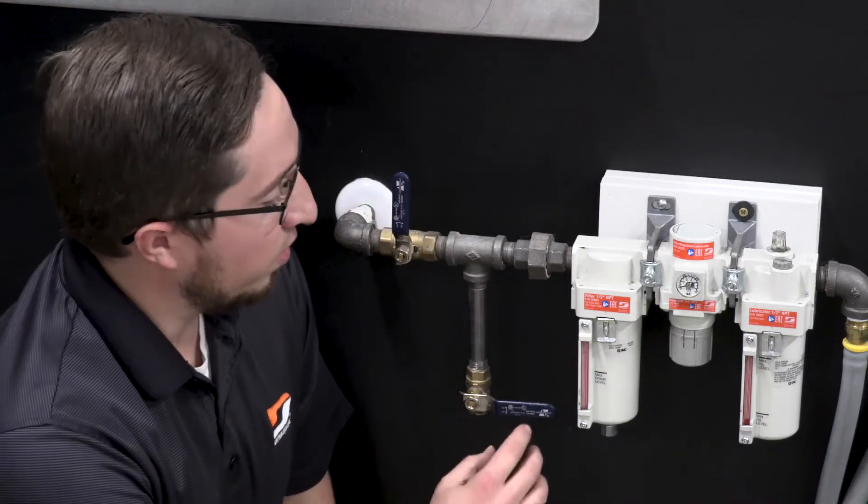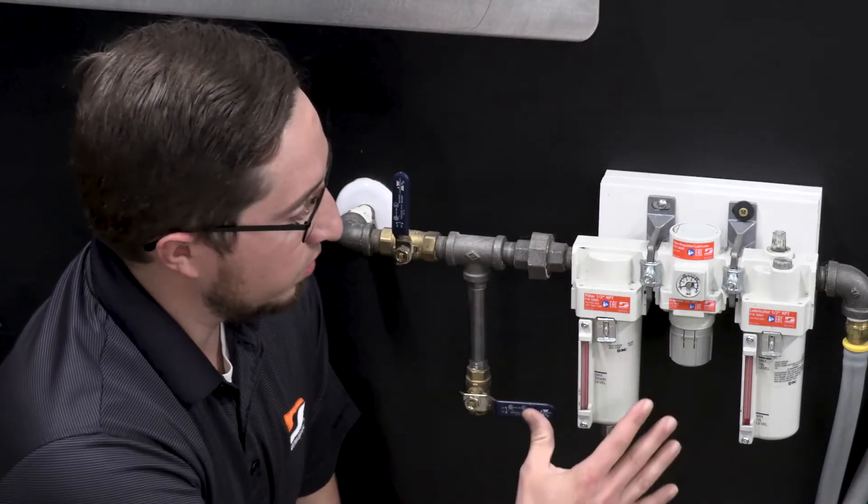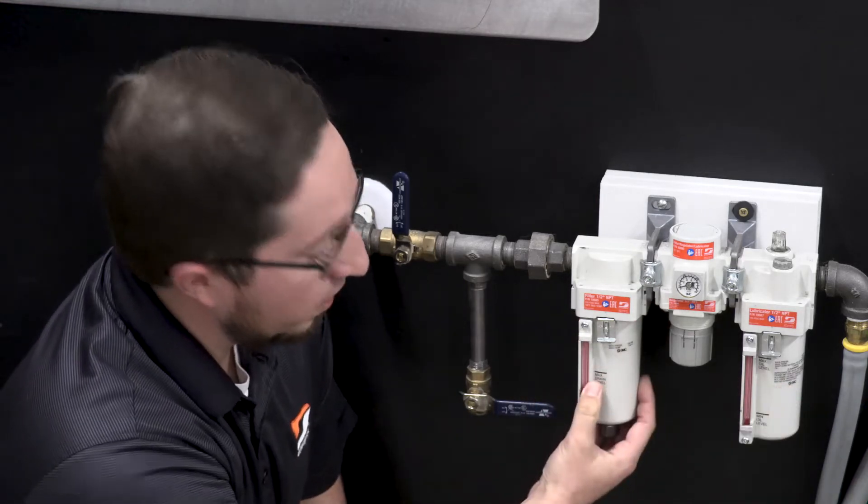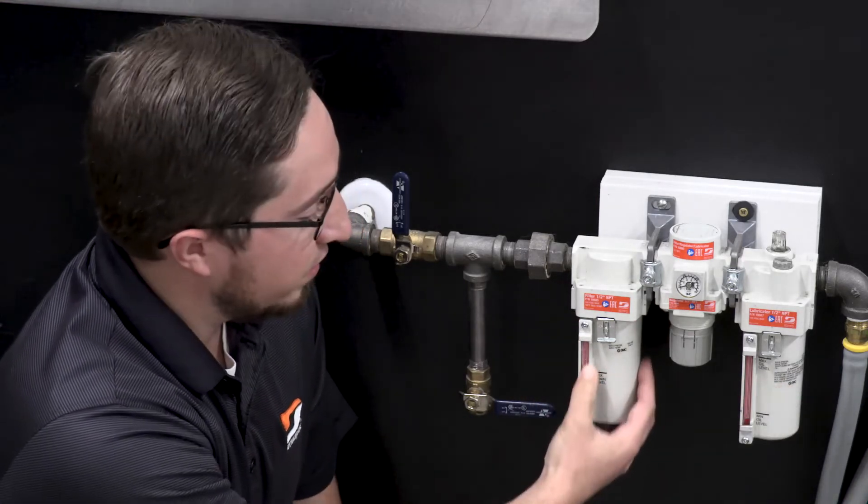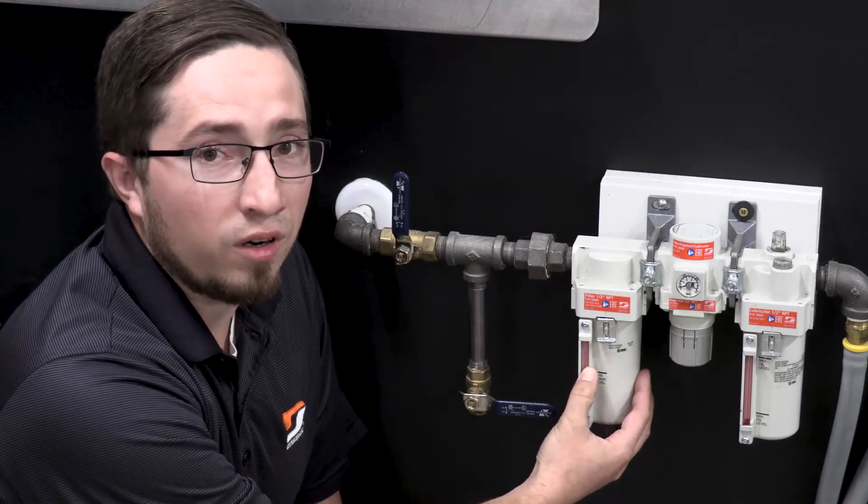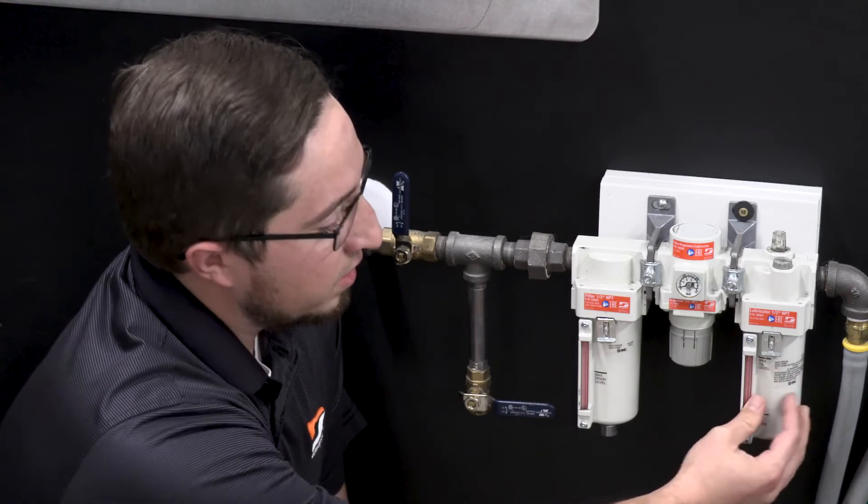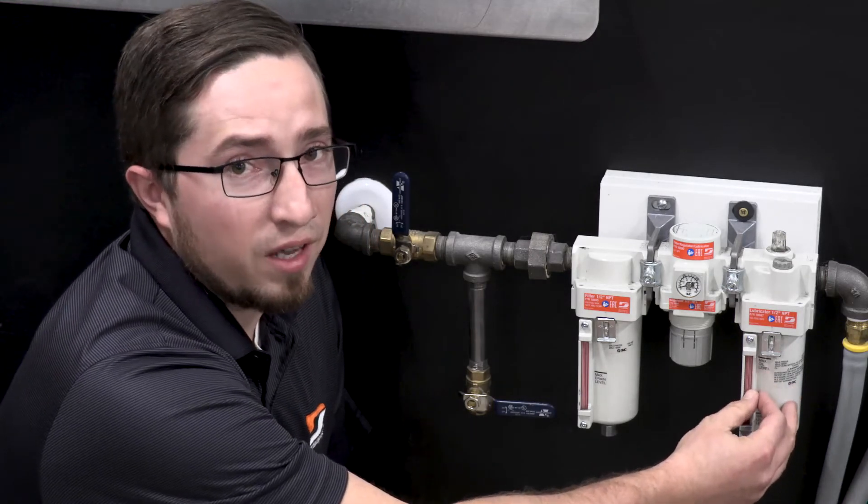On each portion of your FRL here, you'll have your filter and your lubricator, each with a level indicator. On your filter, this is going to indicate how much water or moisture has been trapped from your air lines, and on your lubricator side, this is going to indicate how much lubrication is left.